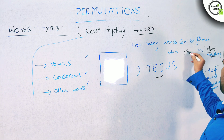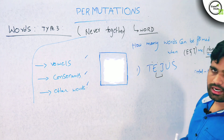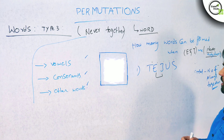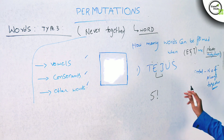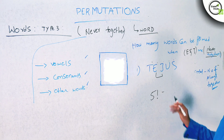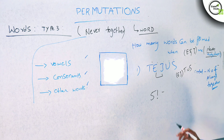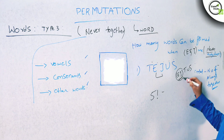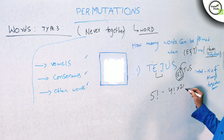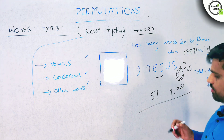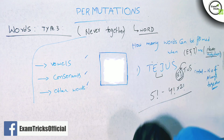When E and J are never together: total arrangements of 5 letters give 5 factorial ways. When E and J are always together as one group, T, U, S are 3 consonants plus the group — 4 units — giving 4 factorial into 2 factorial. So never together equals 5 factorial minus 4 factorial into 2 factorial.